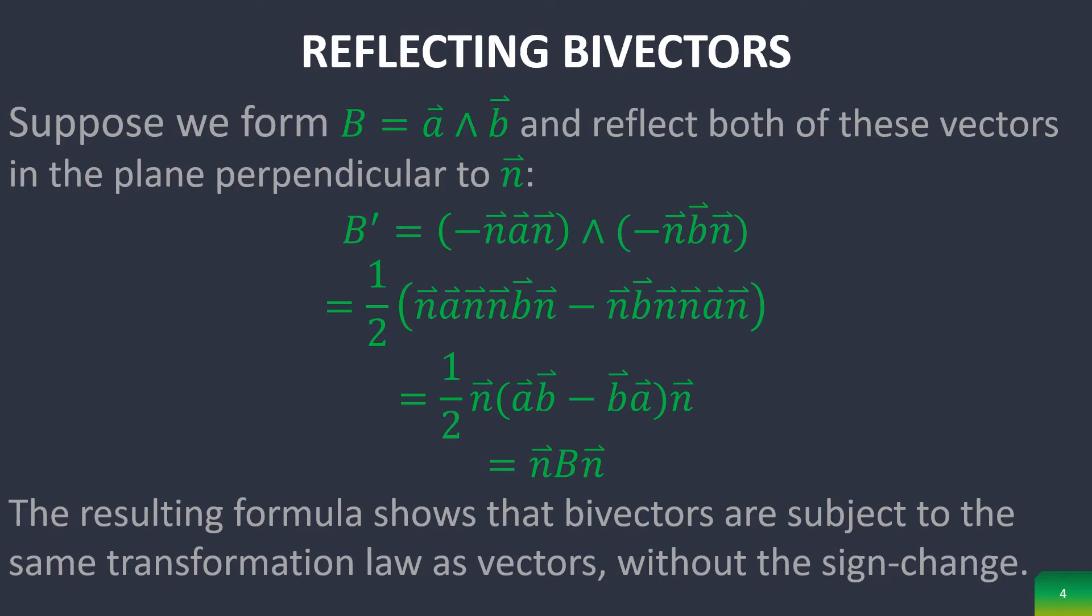You can also reflect bivectors by reflecting each of the individual components of it, which is to say the vectors that make up the bivector. Notice that this doesn't change the handedness of the bivector, but it does change the handedness of the vector when you reflect it.